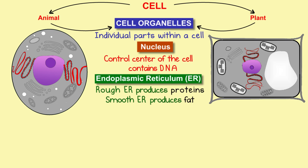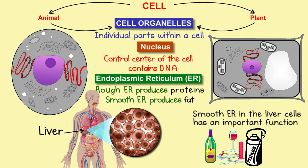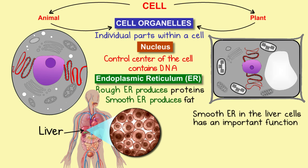Apart from producing fat, the smooth endoplasmic reticulum in liver cells has an important additional function. We humans knowingly or unknowingly may consume many toxic or dangerous materials like drugs, alcohol, pesticides, and insecticides, which can enter our system through the food we eat. The smooth endoplasmic reticulum in liver cells helps to detoxify or remove these harmful substances from our body, which is why the liver is known as the purifier of the body.